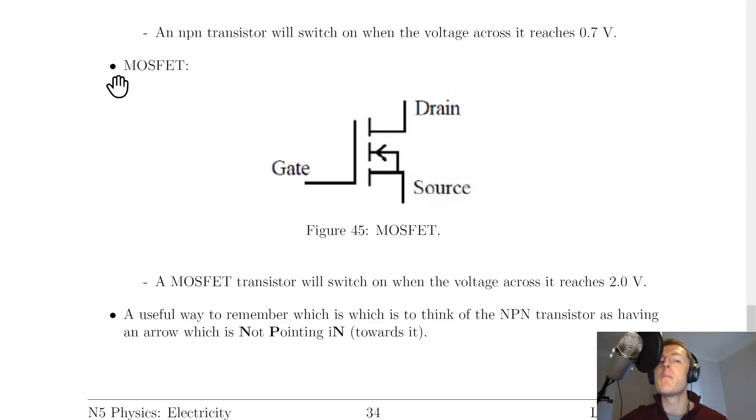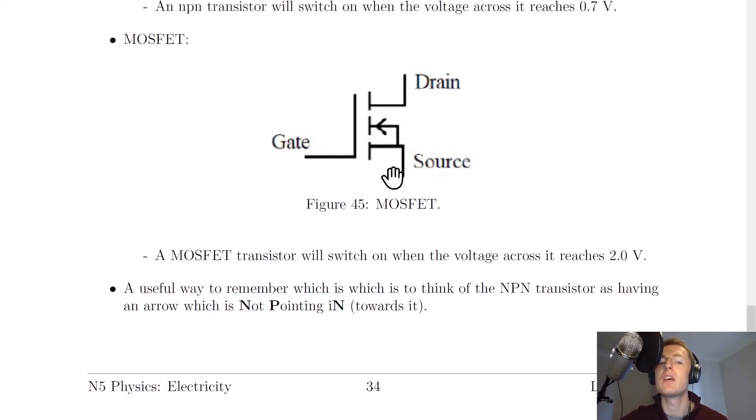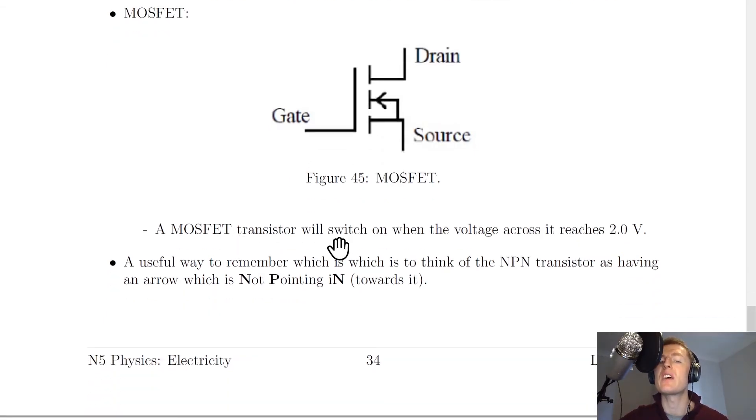Next we have the MOSFET, which again has three parts but they're three different parts called the gate, drain, and source. You'll notice this time we've got a different shape with an arrow pointing in towards the transistor. A MOSFET will switch on when the voltage across it reaches around 2.0 volts.